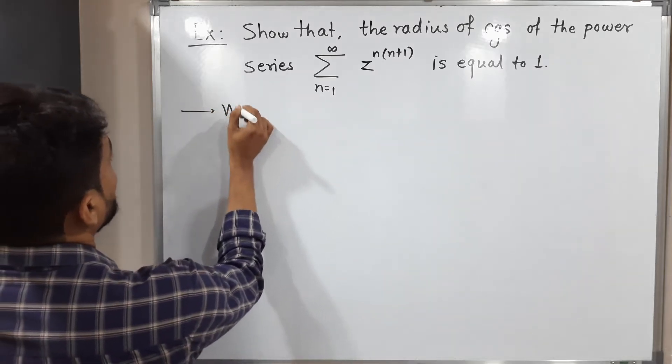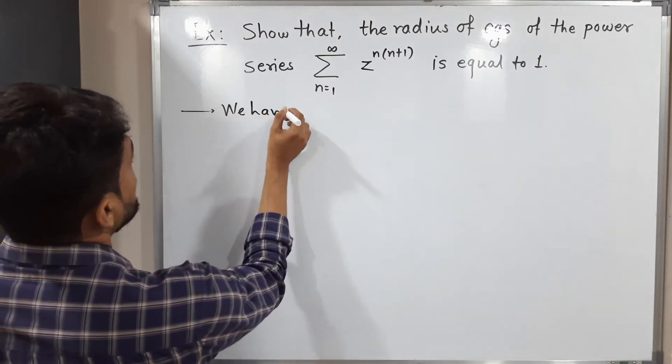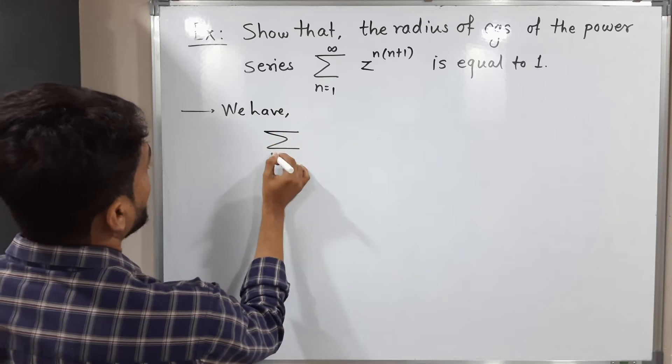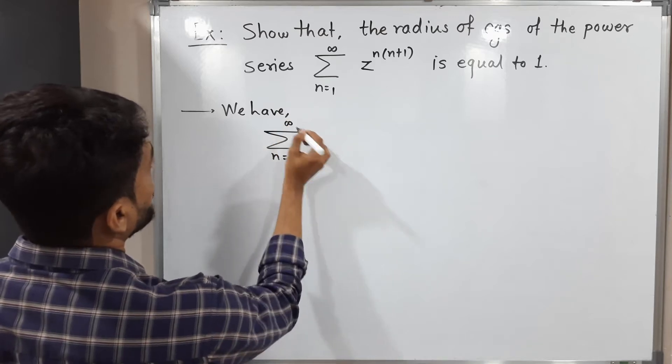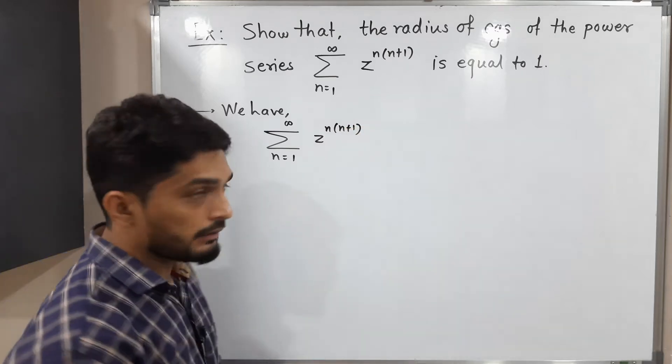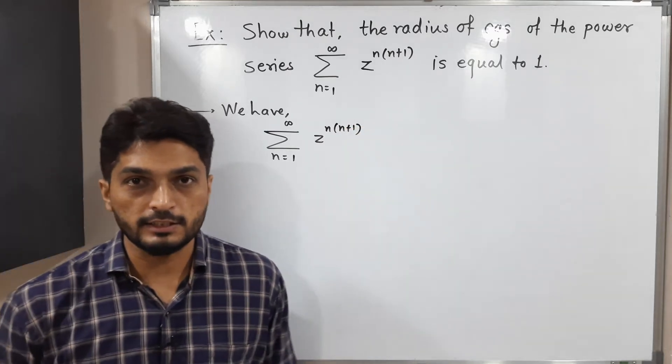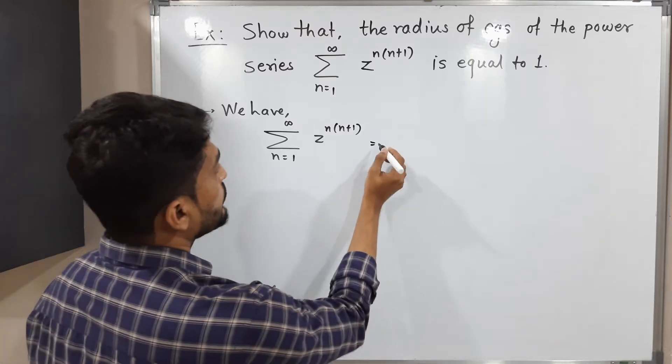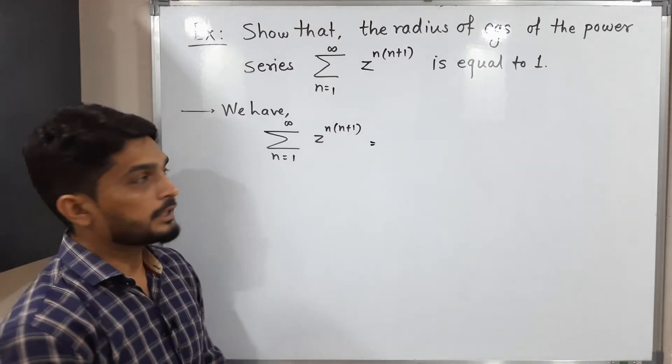Let us write the given power series first. We have summation n running from 1 to infinity z raised to n(n+1). So its power is looking different. So what will I do? I will expand this series.